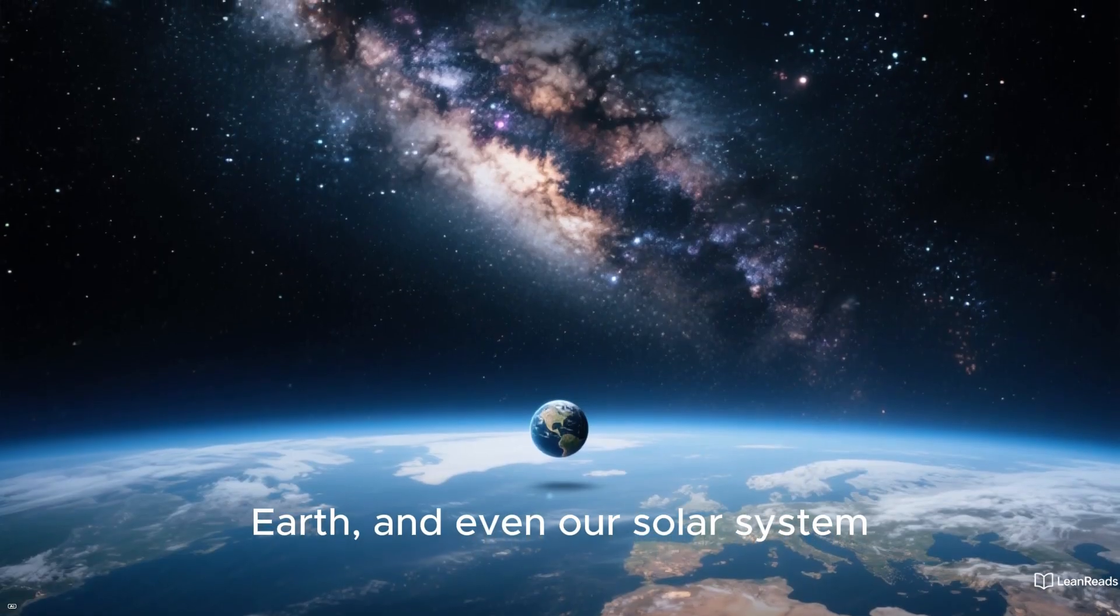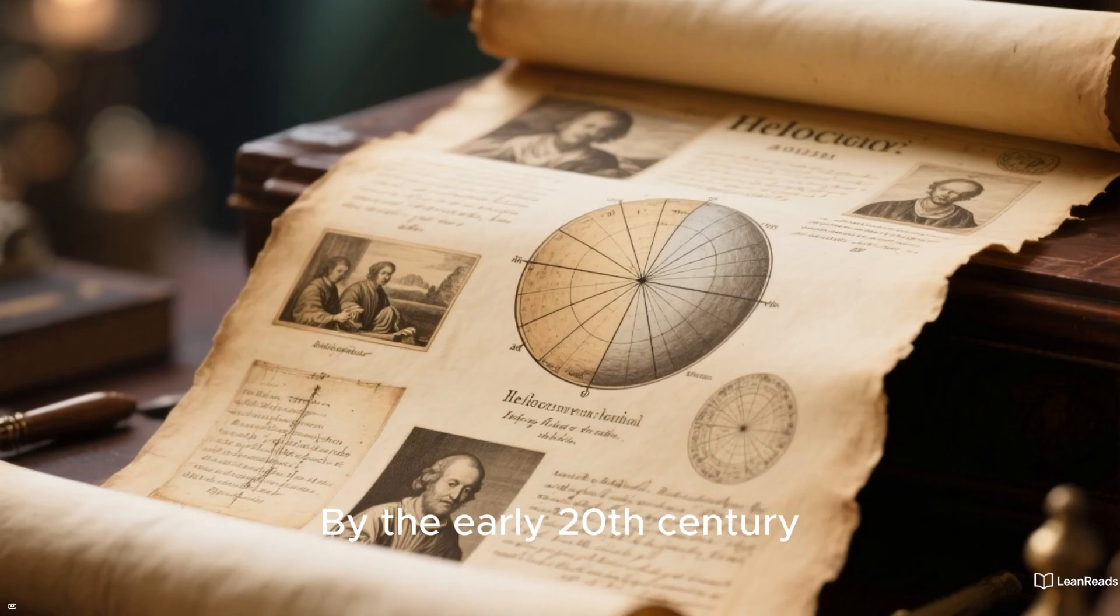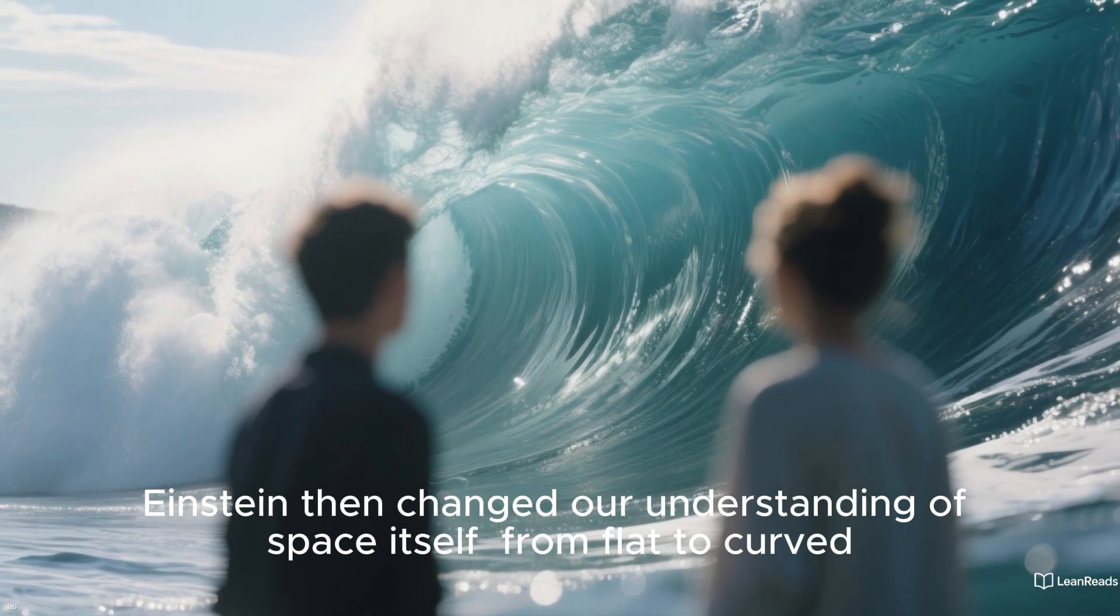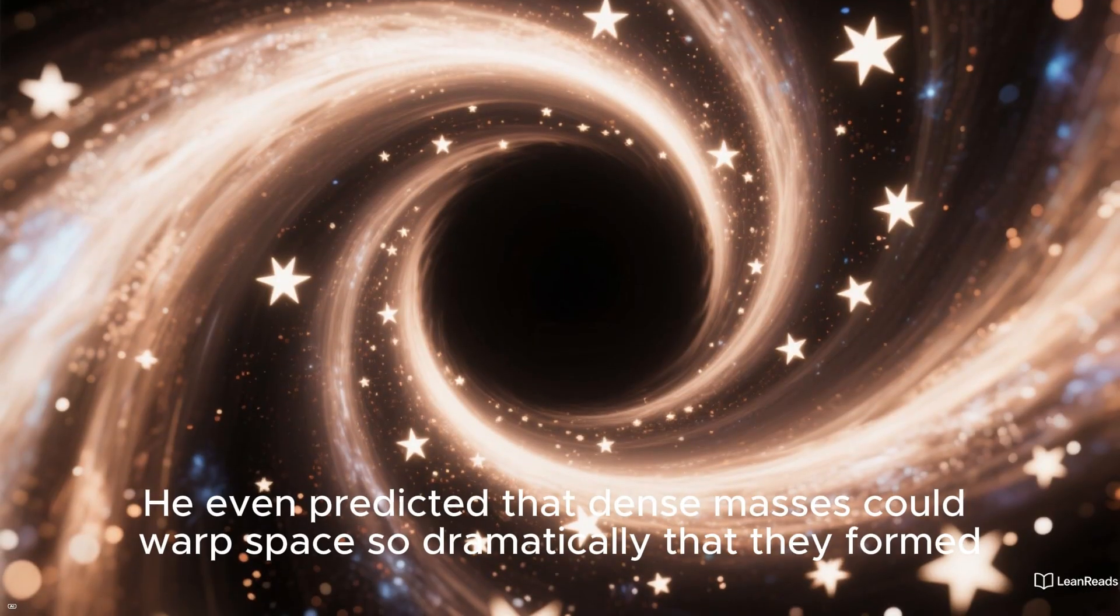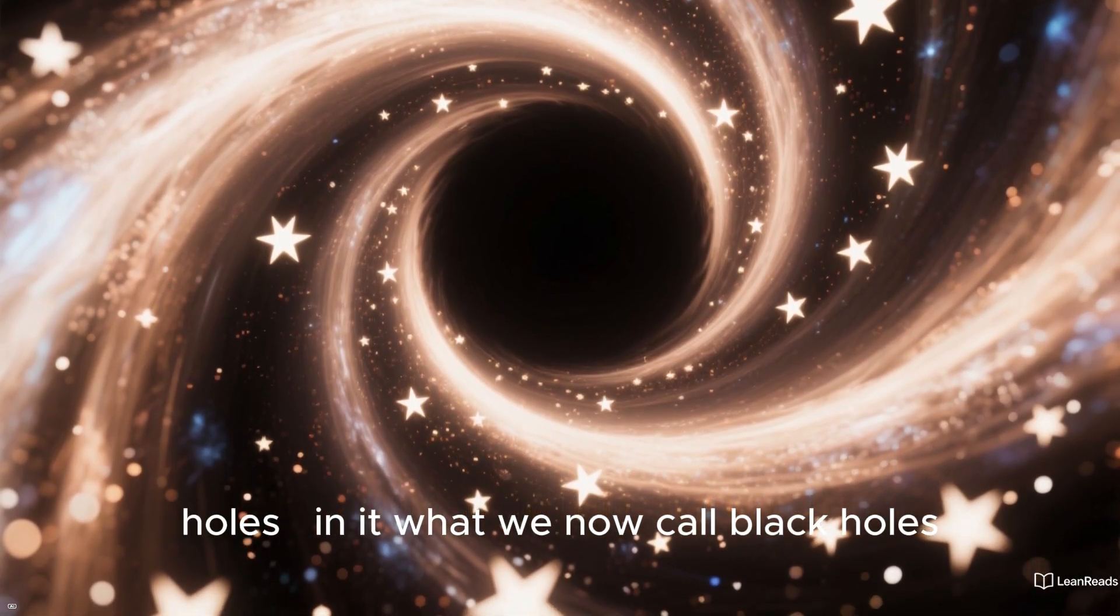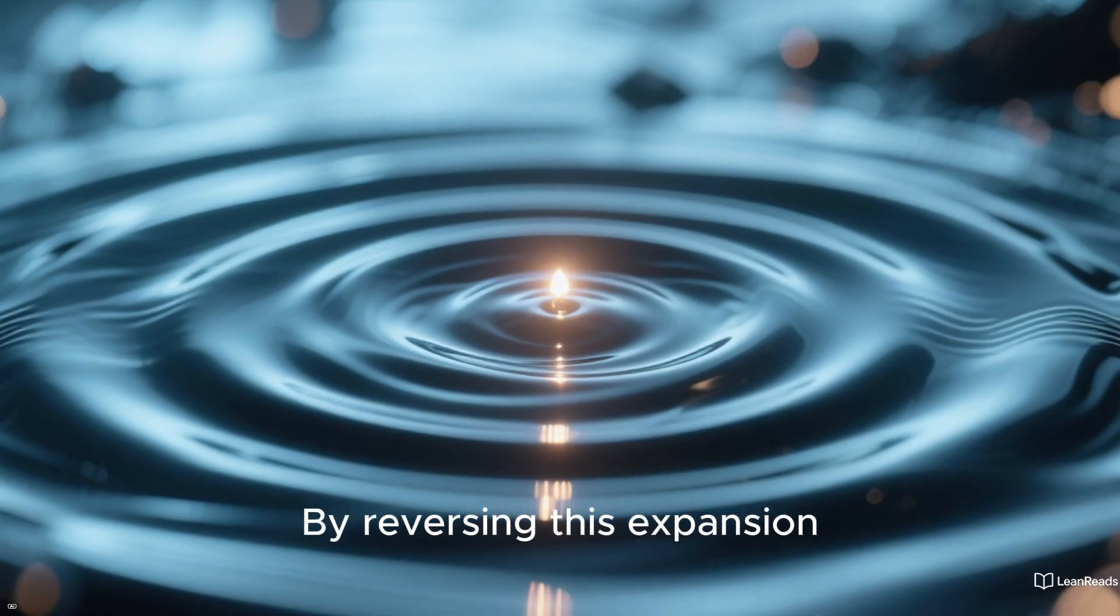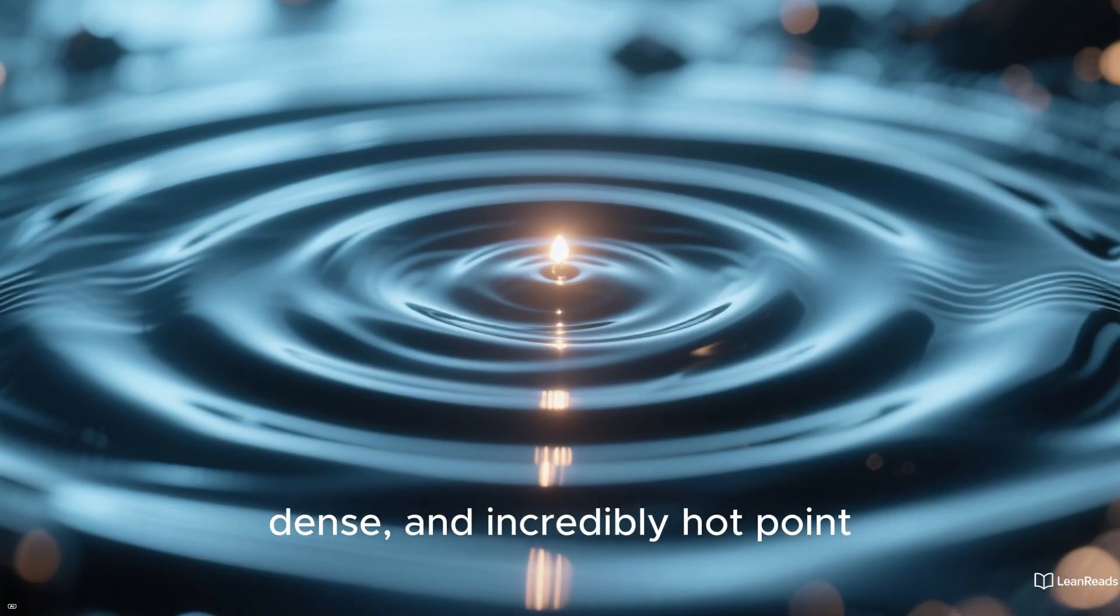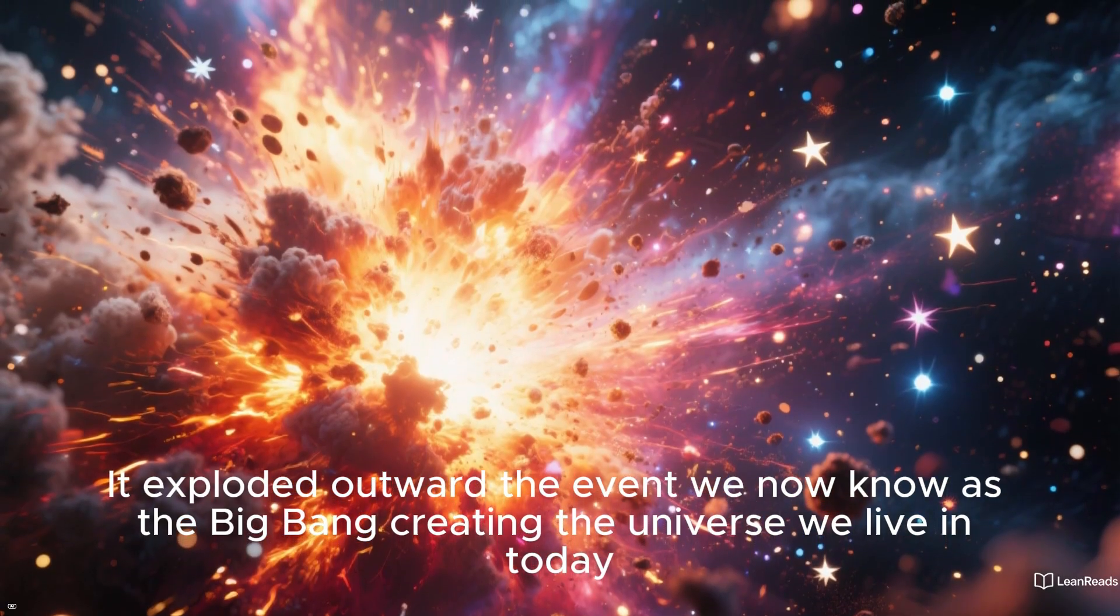Earth, and even our solar system, was revealed to be just a tiny part of a galaxy containing billions of stars. By the early 20th century, this view was confirmed. Einstein then changed our understanding of space itself, from flat to curved, like a calm sea transforming into rippling waves. He even predicted that dense masses could warp space so dramatically that they formed holes in it, what we now call black holes. Finally, observations revealed that the universe is expanding. By reversing this expansion, scientists concluded that the universe must once have been concentrated into a tiny, dense, and incredibly hot point. It exploded outward in the event we now know as the Big Bang, creating the universe we live in today.